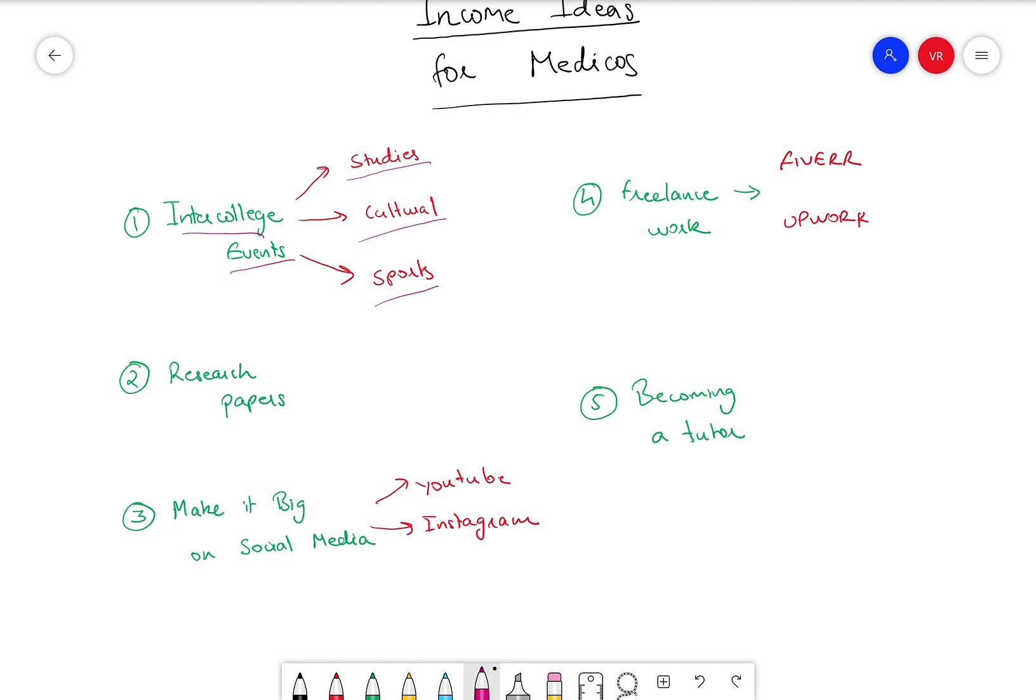The events can be split into three general categories which is studies, cultural events, and sports. So whichever is your passion and you find easy to do well at, you would choose that. Usually the ones with studies and sports have the higher money involved, around 10 to 20,000, so you would get a lump sum amount if you are good at it.